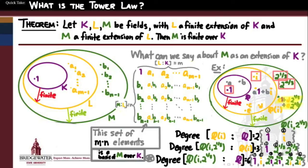That's the most useful and important conclusion of the tower law: not just that M is a finite extension of K, but that the degree of M over K equals exactly the product of the degree of M over L times the degree of L over K. So that's the tower law — one of our most important tools for understanding how, when you extend an extension and both extensions are finite, the degrees of those extensions multiply.